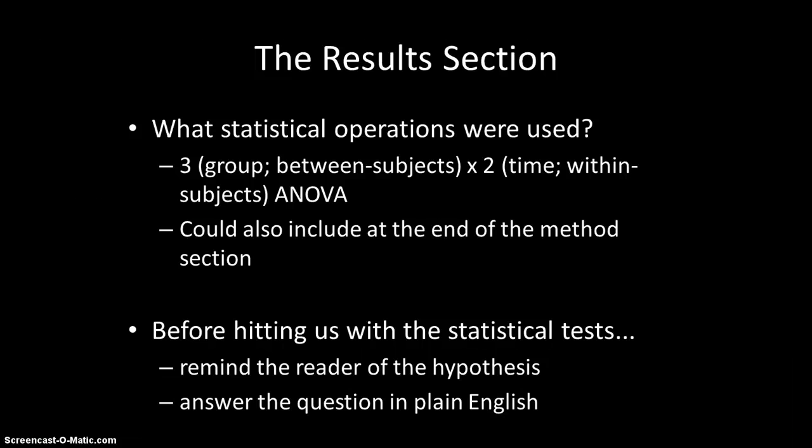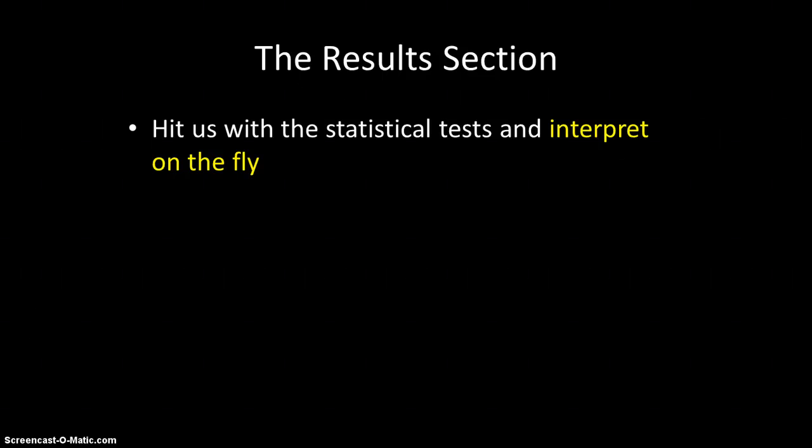I would also say that it's a useful thing to do to answer your question in plain English. So if you have a question related to the effect of some kind of manipulation on some outcome, you're eventually going to bring to bear lots of statistical evidence that would help the reader to figure out whether the hypothesis is supported or not supported. But I would say right up front, before you even get to that statistical evidence, you might just consider saying, here's the answer in plain English. In fact, our hypothesis that predicted this effect on that outcome was, in fact, not supported. And then, and only then, would you get to the statistical test that would say, in essence, and here's why.